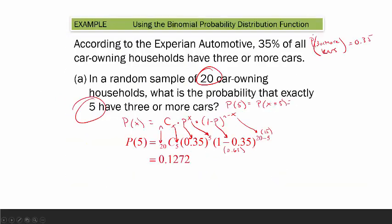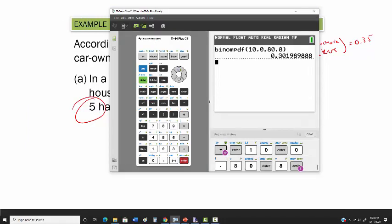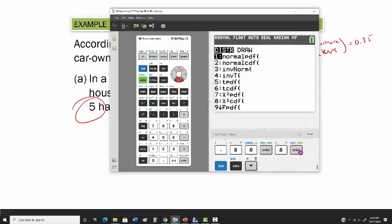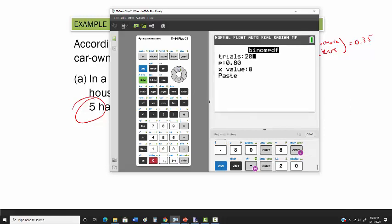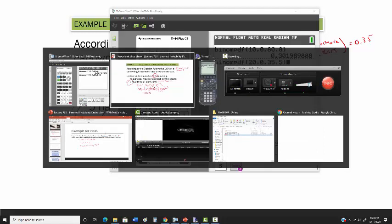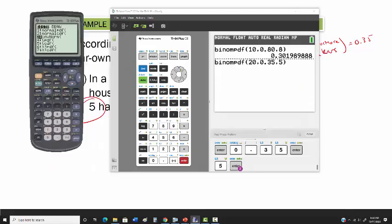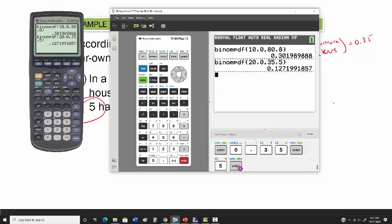So going back here, all right, with this problem here, what's the probability that exactly 5 out of 20, when the probability of success is 0.35? So second function DISTR, we're going to go down to Binome PDF. Here the trials were 20, probability of success is 0.35, and we want it exactly 5. And then just remember, if you have this, unfortunately what you have to do is you have to type it in. So it was 20, 0.35, 0.1272 when we round it. You get the same thing over here, 0.1272 right here.